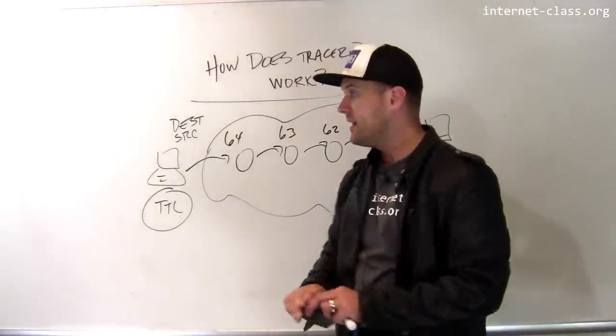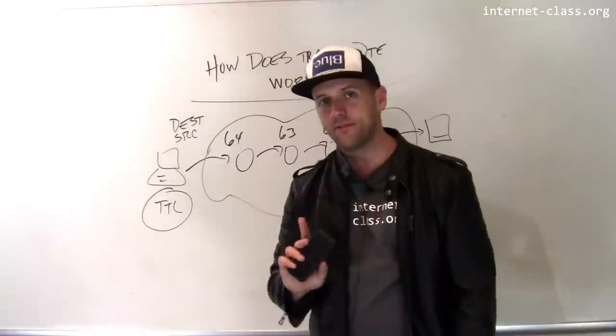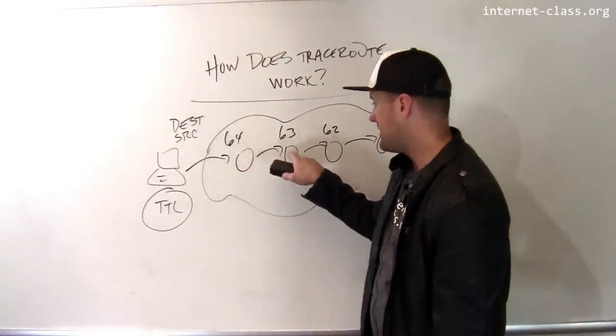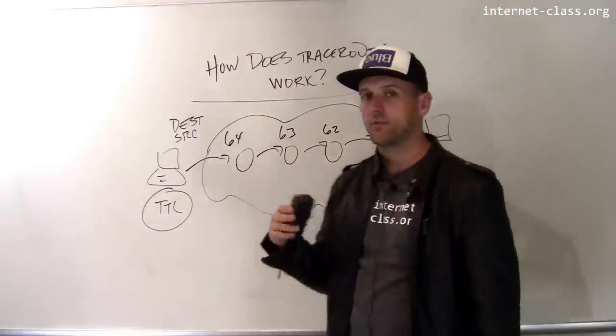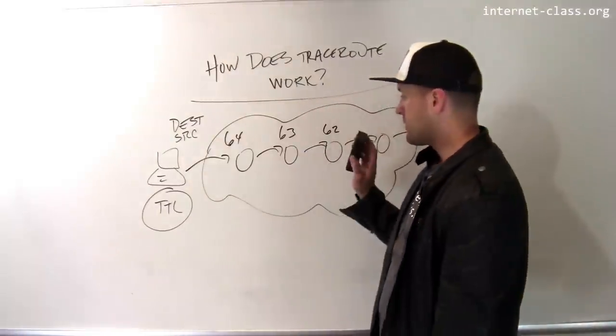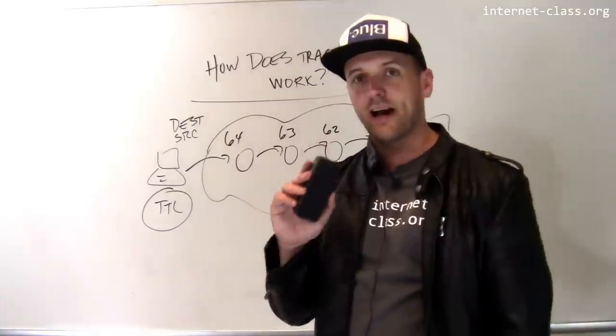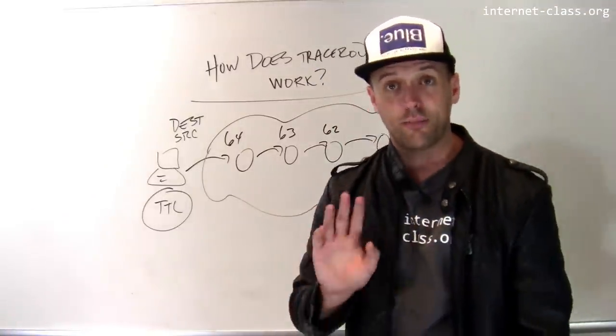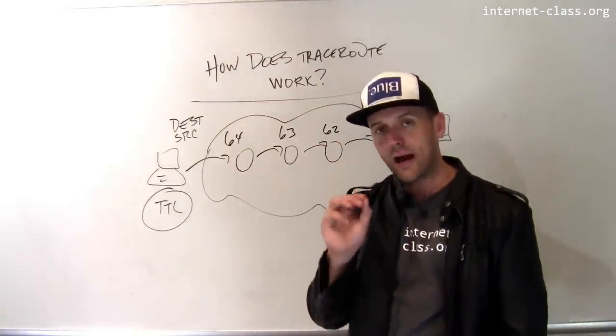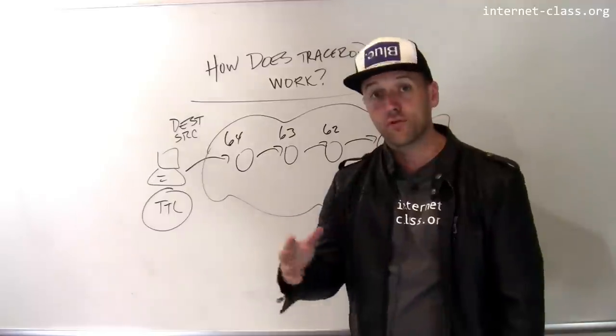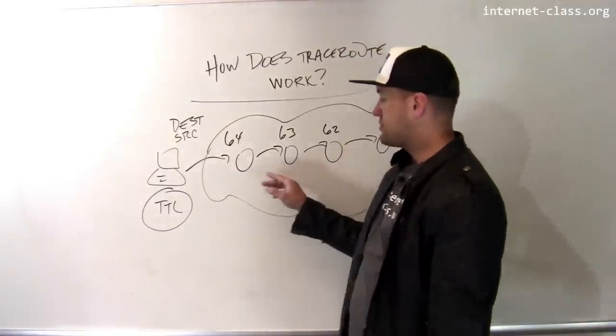Now, what traceroute does is it exploits this time to live field to find out the identities of the routers along the routing path between a source and a destination. And the way it does this is it uses the ICMP, the Internet Control Message Protocol, because routers can be configured, most routers are configured, to do the following.